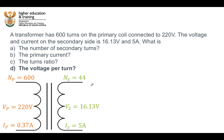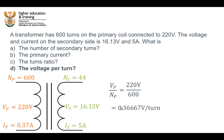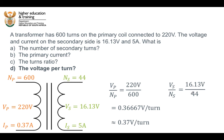Let's now have a look at the final part — the voltage per turn. We can use either the primary or the secondary side of the transformer to work this out and should get the same answer. The voltage per turn is the voltage across the entire coil divided by the number of turns in that coil. Using the primary coil: 220 volts divided by 600 turns equals 0.36667 volts per turn, which we approximate to 0.37 volts per turn. Using the secondary coil values: 16.13 volts divided by 44 turns gives 0.36659 volts per turn.